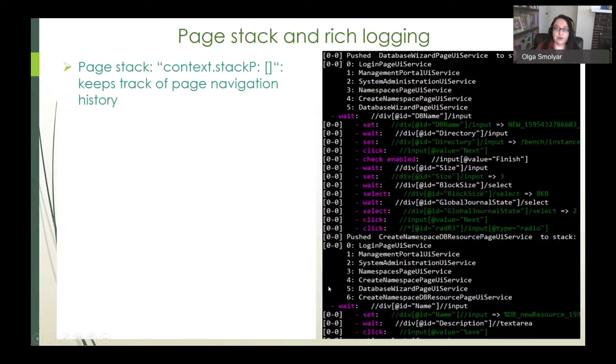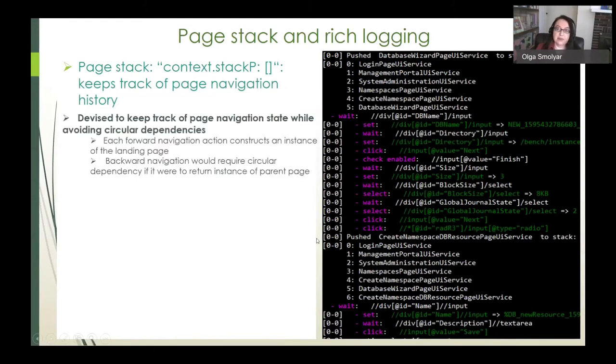In addition to the current page, we also maintain a page stack, which we refer to as StackP, an array that keeps track of the page navigation history. And this was devised to support backwards navigation while avoiding circular dependencies. These would arise if each forward navigation action imports and constructs an instance of its child landing page, then backward navigation would require the child page to import and instantiate its parent, and this would, of course, cause an error. Instead, we devise these utility methods.